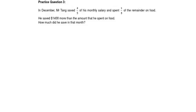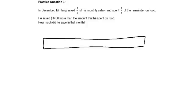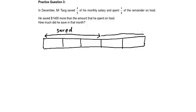In December, Mr. Teng saved three-fifths of his monthly salary and spent one-third of the remainder on food. Let's draw a model — the whole model represents his monthly salary. He saved three-fifths, so I cut into 5 parts: 1, 2, 3, 4, 5. Three of the five parts are saved. The remaining 2 parts is the remainder.